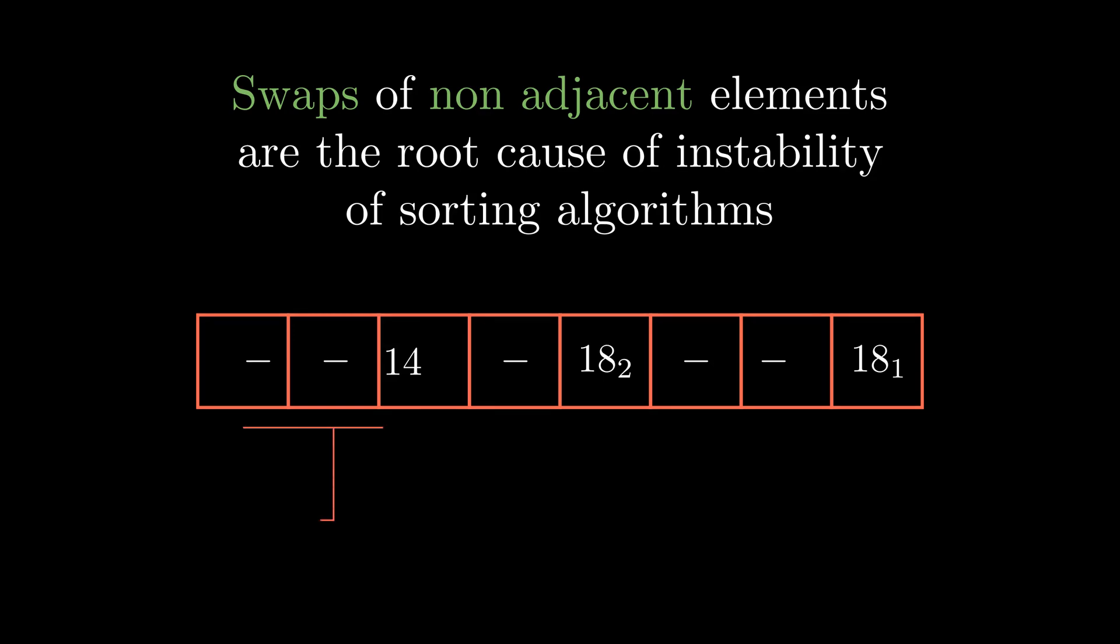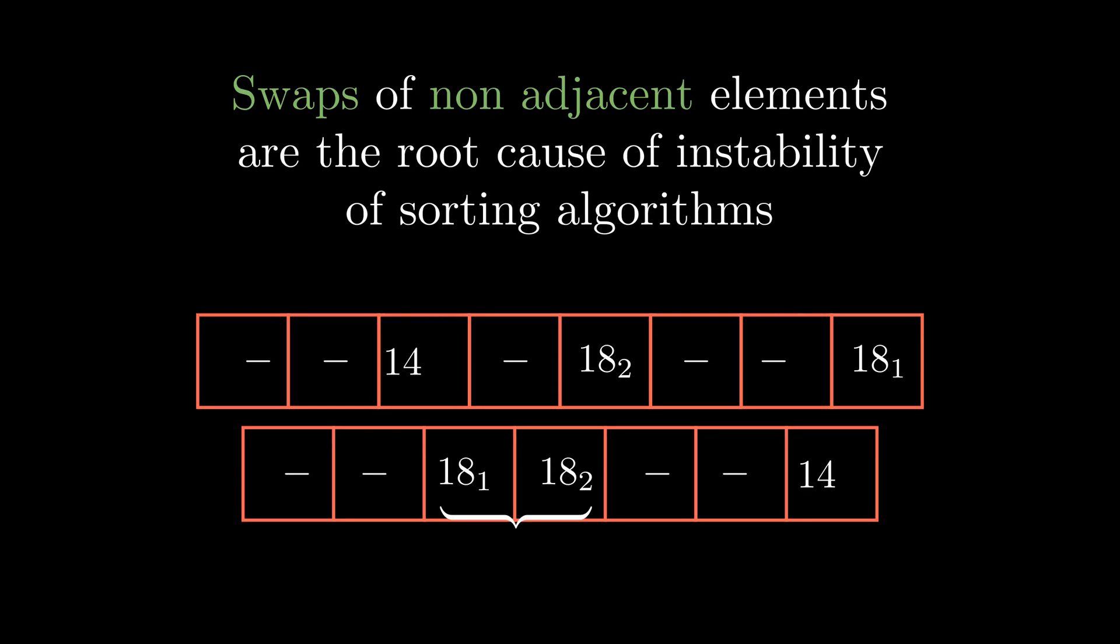If your algorithm, however, restricts itself to swapping adjacent elements only, then you can always avoid swapping 18₁ and 18₂ and never land in this problem.